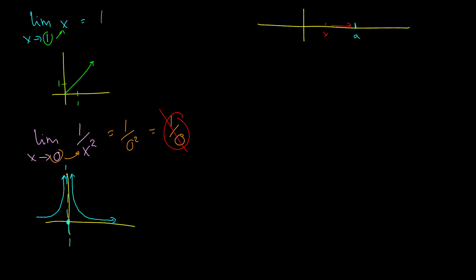What we do is pick a point on the right that's close to 0 and see what happens as we get close to 0 from the right. We write this as the limit as x approaches 0-plus of 1 over x squared, where the plus means it comes from the right. We can guess it's probably equal to infinity since the graph seems to go up to infinity.